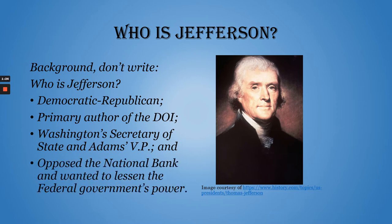Finishing up on Jefferson's background: he opposed the National Bank and wanted to lessen the federal government's power. He was like Washington — he was from Virginia. He owned a big plantation and was a slaveholder, part of that slave-holding Virginia plantation class that's going to dominate the presidency in the first few years. After Jefferson will come James Madison and James Monroe, both also from Virginia and part of that slave-holding plantation class. So four of the first five presidents all came from Virginia with pretty similar backgrounds.